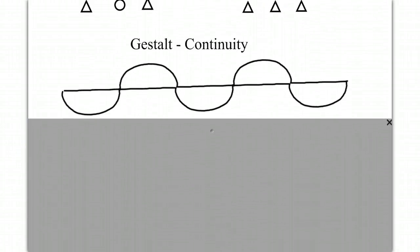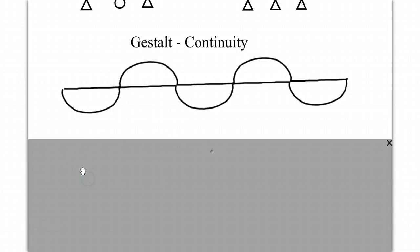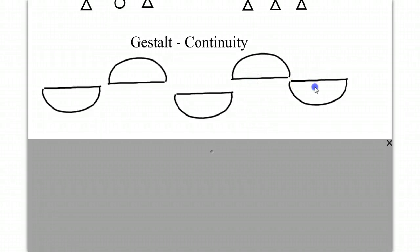The gestalt concept of continuity. In this case, based on continuity, we might see one long, continuous, curvy line being bisected by a relatively straight line. However, in fact, these are distinct semicircles, but our brain doesn't see it that way when it's connected.